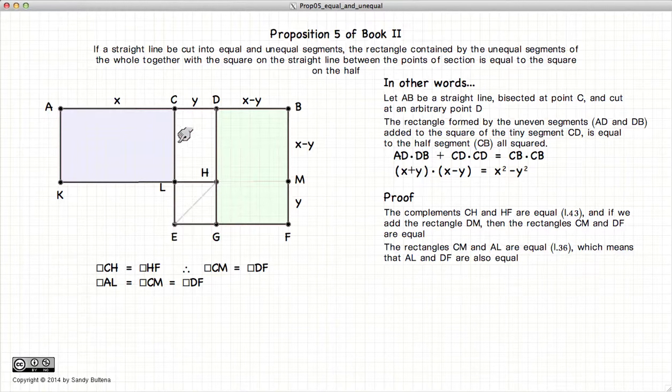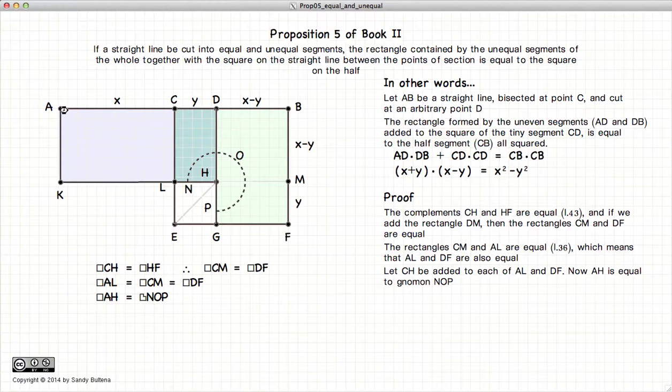Add this area to both sides of our equality. And we have AH is equal to NOP. Again, this purple area plus the dark green is equal to the light green plus the dark green.